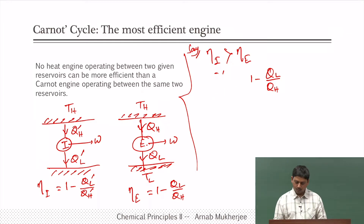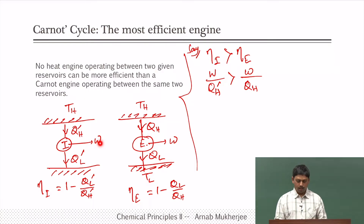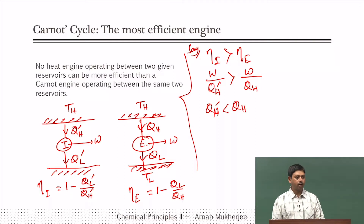To write it differently, the efficiency of the irreversible engine is W by QH prime, and this is greater than that of the Carnot engine. We have adjusted the heat input and output such that the work is the same — we kept the work the same but efficiency is different. Efficiency written in simpler form: W equals QH prime minus QL prime and QH minus QL, but the heat inputs are different. Since efficiency of the irreversible engine is higher, QH prime must be smaller than QH.